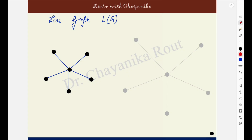How to find out the line graph of any graph? Here we are given a graph G and we have to find out the line graph. Given a graph G, what you will do is label the edges of the graph.